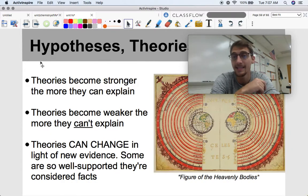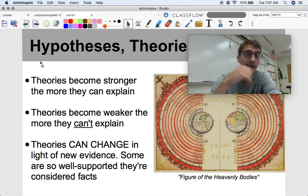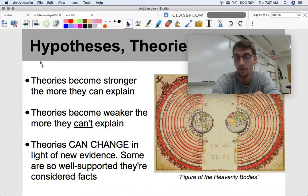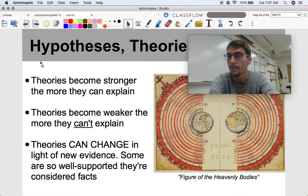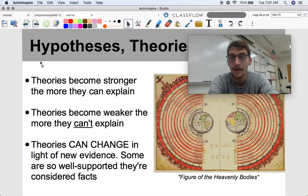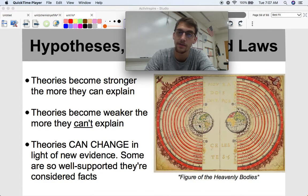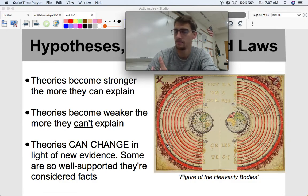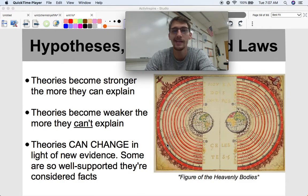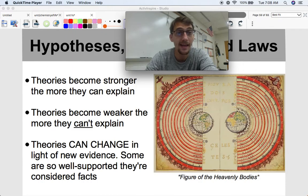Theories become stronger the more they can explain, and theories become weaker the more they can't explain. But a neat thing about theories, as opposed to, say, dogmatic beliefs that do not change in the light of any evidence, is that theories can change in the light of new evidence. Some are so well-supported that they're considered facts. Science is cool that way, in that if there's new evidence that might suggest that we were wrong about something, theories can change, and theories can be adjusted to account for new evidence. So here's a defunct theory, the geocentric model, the idea that the Earth is at the center of the universe and that everything else revolves around Earth. This has been debunked. The evidence did not support this theory, and new observations came to light that this theory could not explain. Thus, we favored the heliocentric model, where the planets revolve around the sun, and now the model of the universe is just huge, and there is no center to it, and it's always expanding. But yeah, theories can change. They're not dogma.